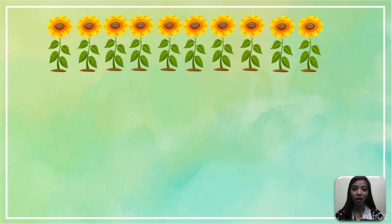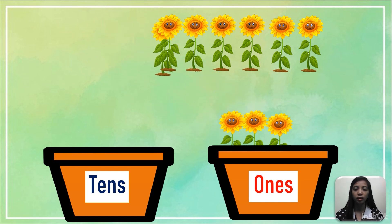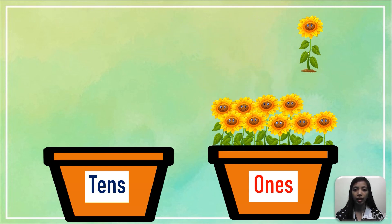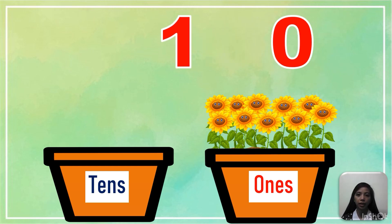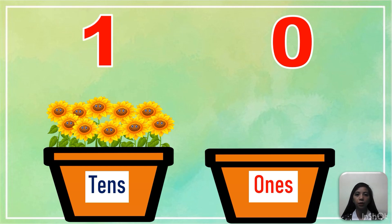Another set of sunflowers. Let's put them in their proper places — 1s place or 10s place. So let's count the sunflowers: 1, 2, 3, 4, 5, 6, 7, 8, 9, 10. Oh no! There are 10 sunflowers in the 1s place. The rule says each place should only have a 1-digit number. So we need to move the 1 into the 10s place. 10s means we have 10 objects or value. So now, 1s has 0 value and 10s has 10 value.